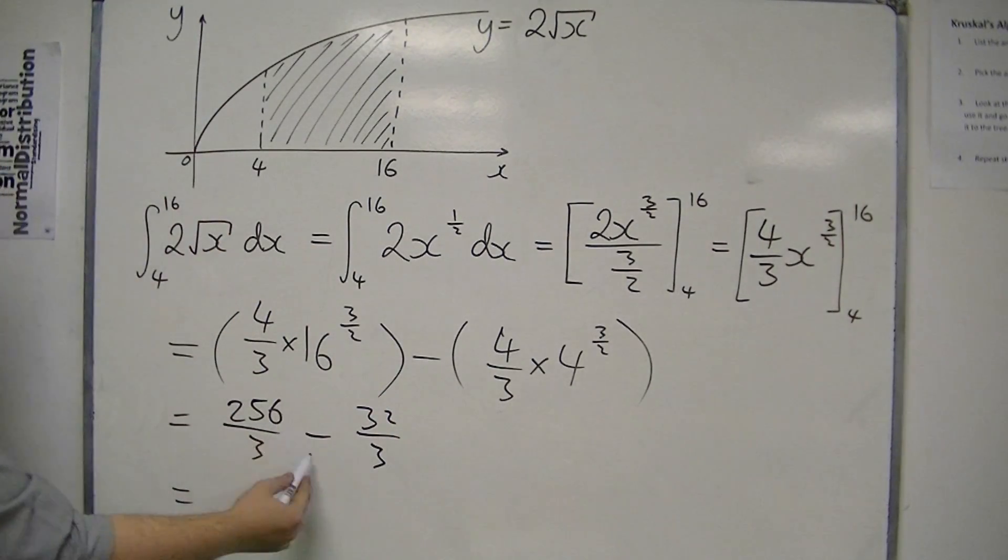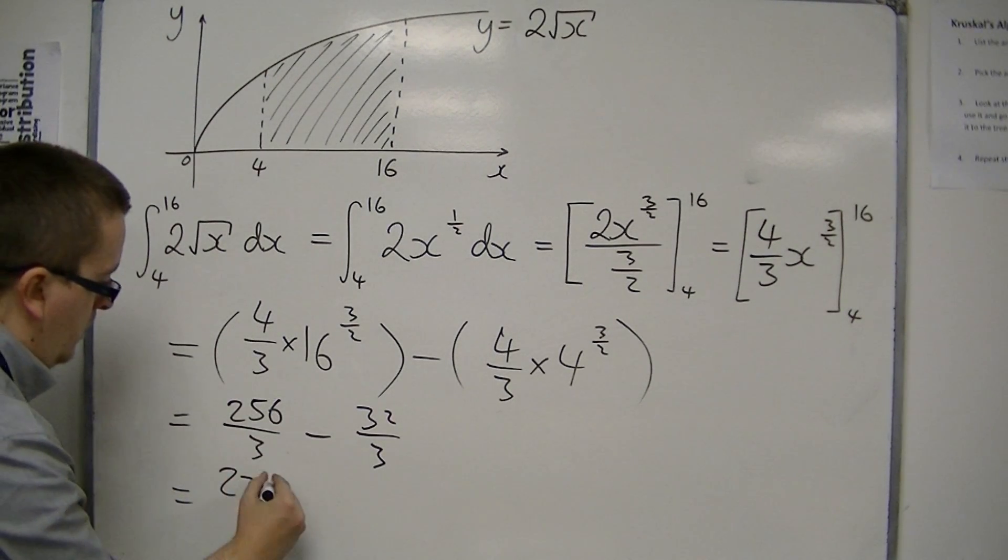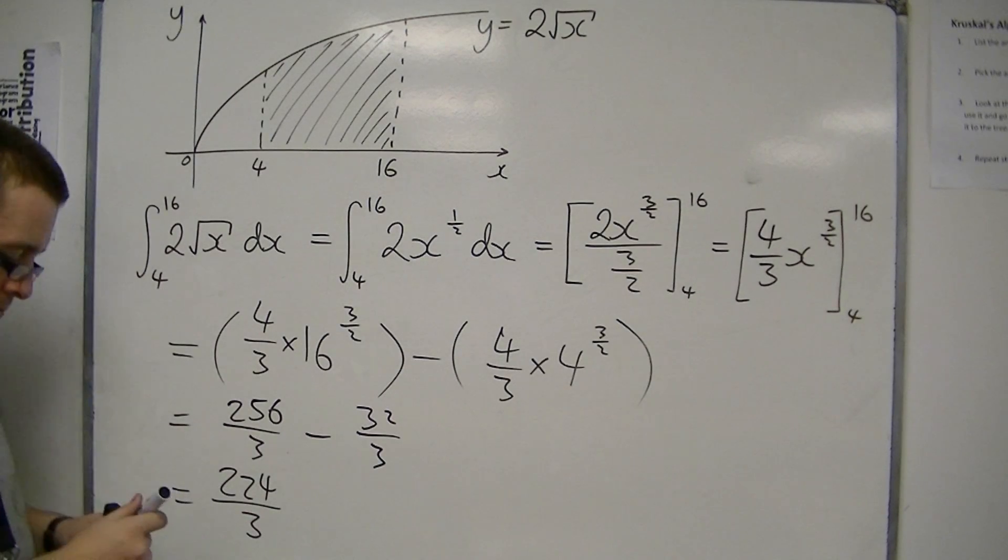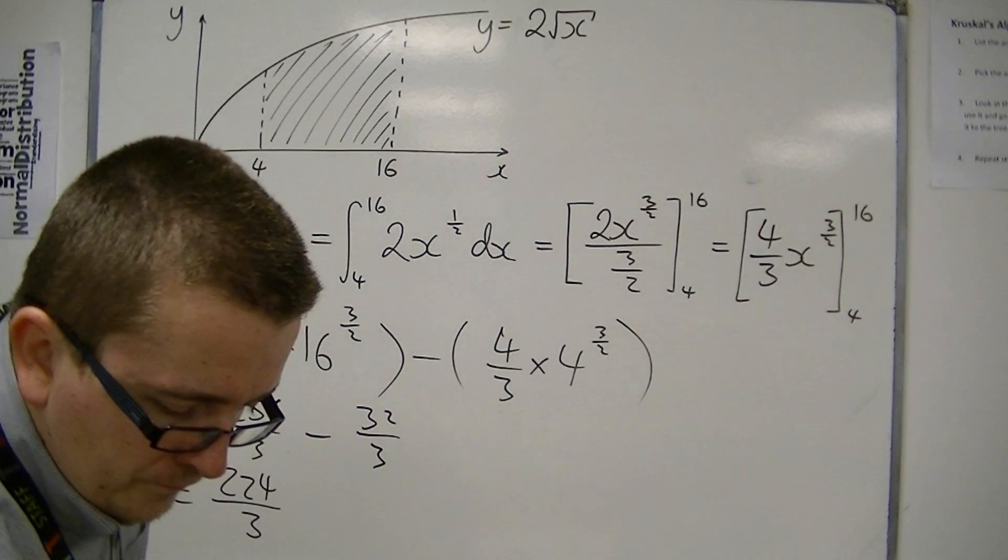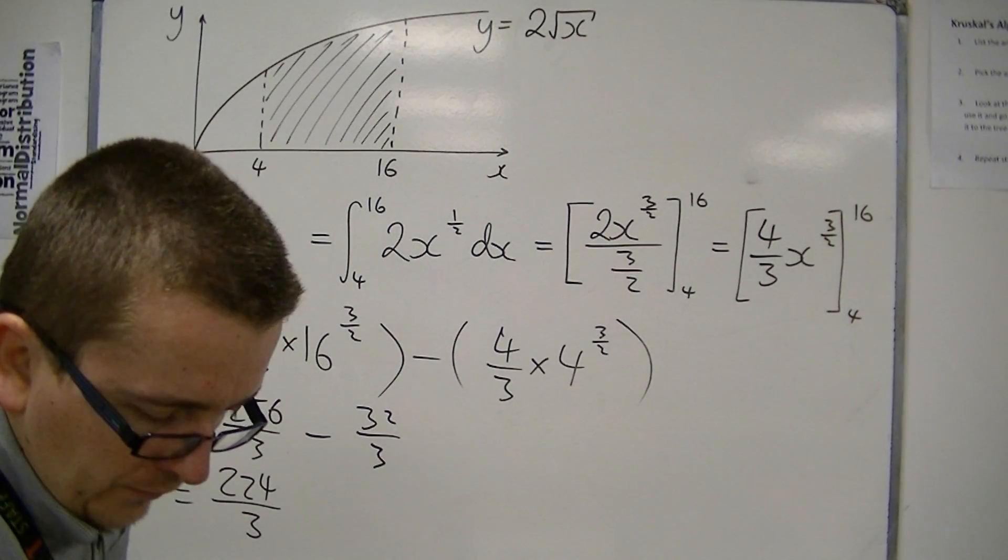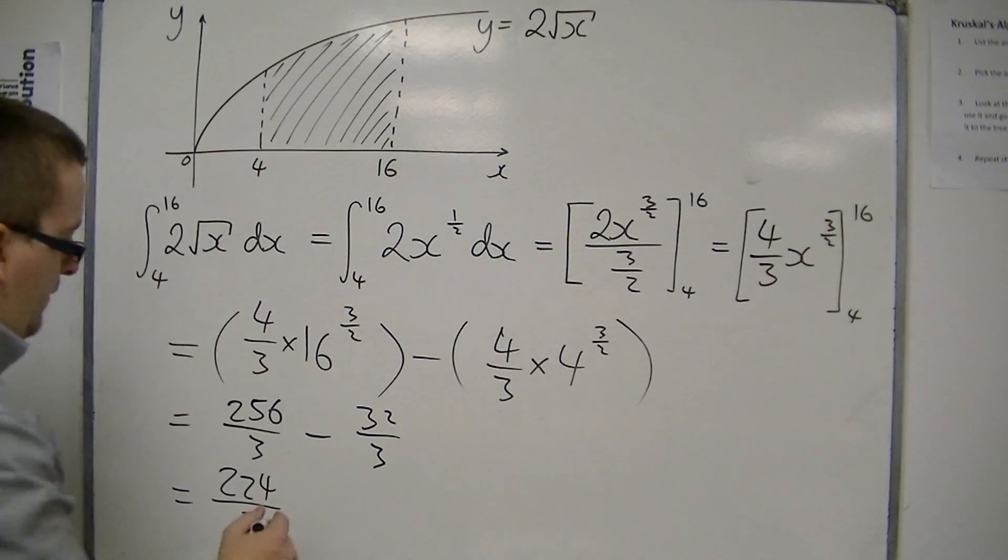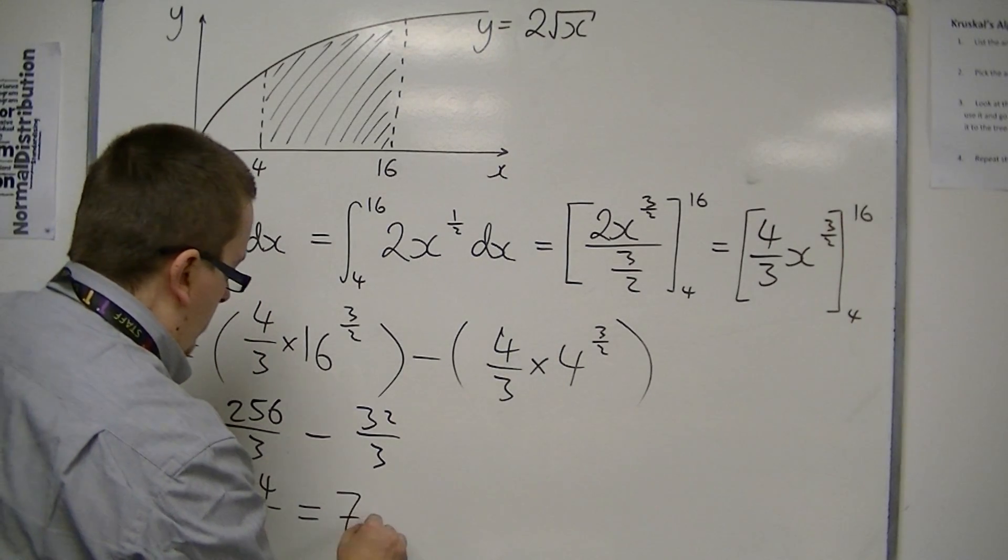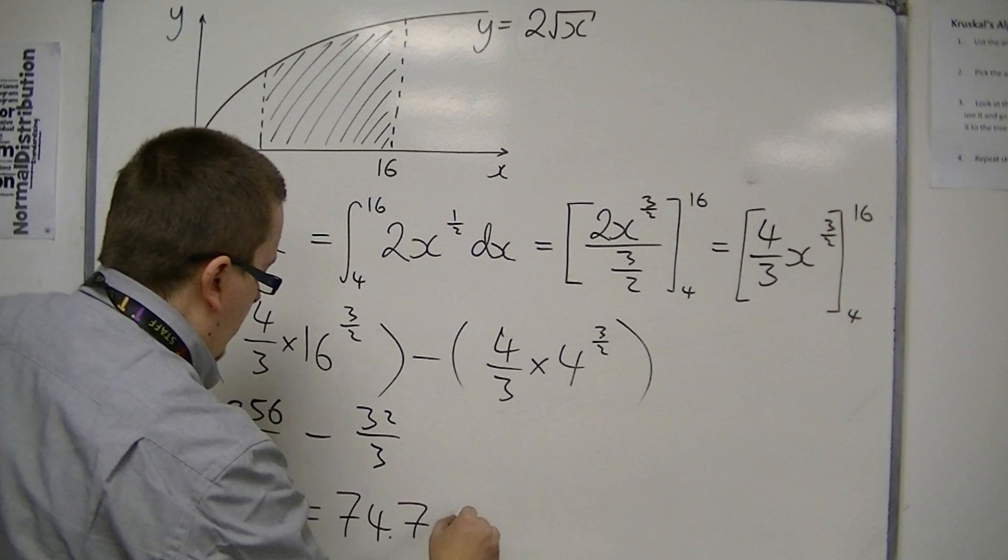So you've got 256 over 3, take away 32 over 3, which will be 224 over 3, which is approximately 74.7 to 1 decimal place.